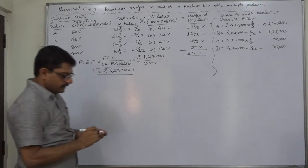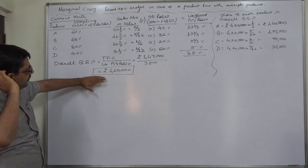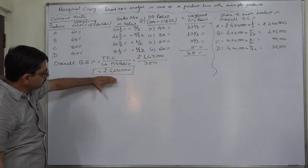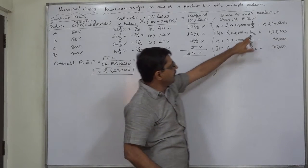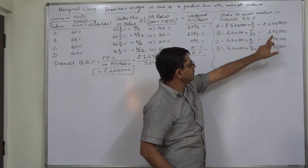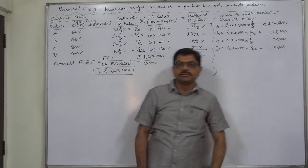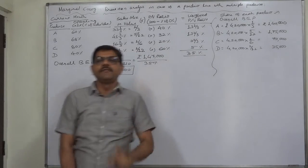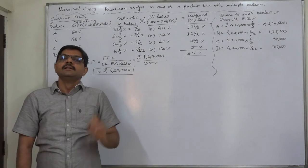Total is 4,20,000. So now we can say that if the company makes sales worth rupees 4,20,000 in this proportion, that means A 1,40,000 rupees, B 1,75,000 rupees, C 70,000 rupees, and D 35,000 rupees, then only the firm or the company can reach the break-even situation.